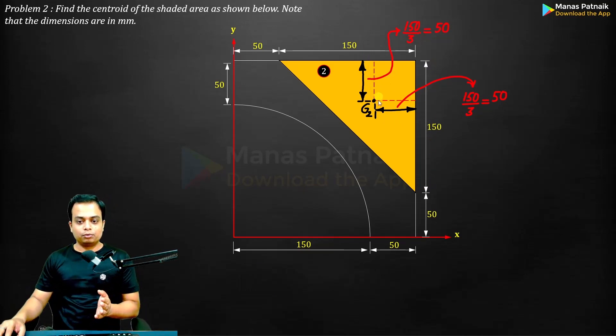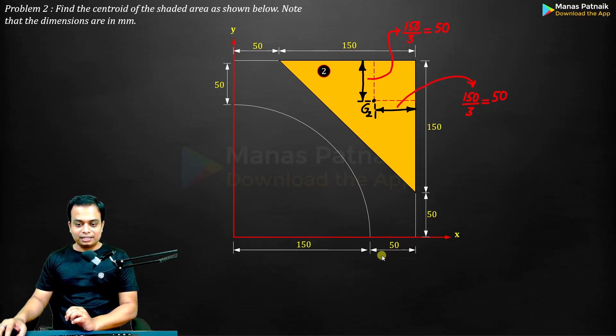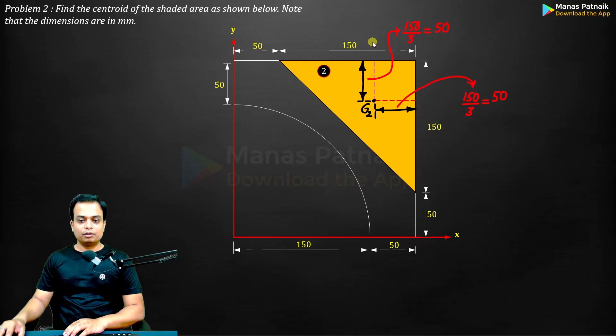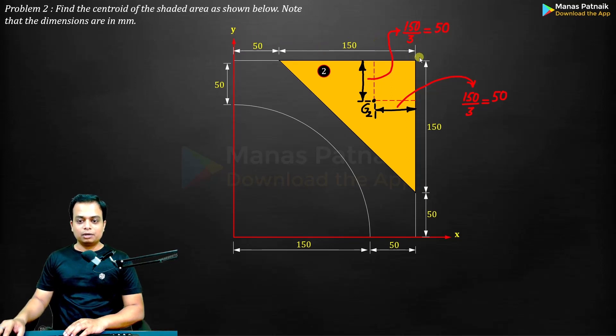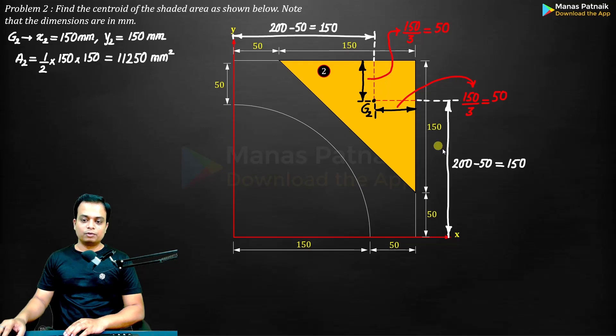Again, we need the distances x₂ and y₂ with respect to the y and the x axis. So this distance is going to be x₂ will be 200 minus 50. I hope you got this. This is 200 minus this 50 will give you this 200 minus 50. Similarly, this is 200 minus this much, that is 50, so we'll get y₂. So x₂ and y₂ are known to us. What you need is the area: half of base 150 into height 150. Just do the math, very simple.